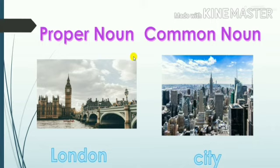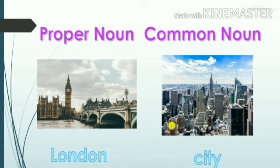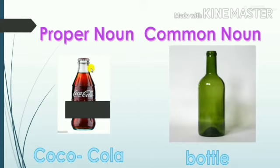Now, this is the example of city. Here you can see this image of London, which is a particular name of a city — that is a proper noun. And this image is generally any city, which is not a name — that is a common noun. Now, this is the bottle of Coca-Cola, and this is generally a bottle. So Coca-Cola is a particular bottle — it is a name, a proper noun. And this bottle is not a name; it is generally a bottle — a common noun.